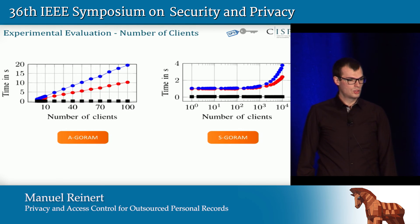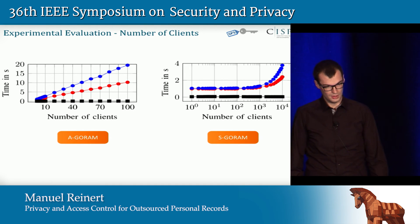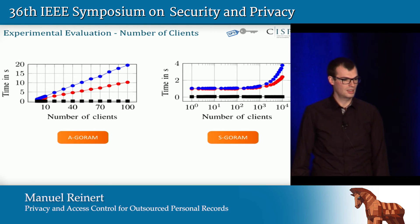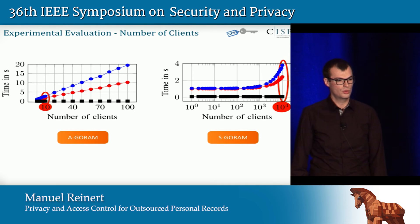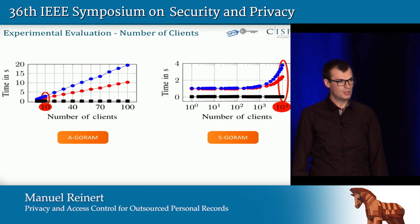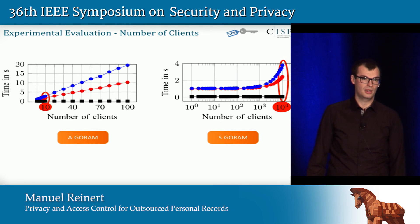Looking at the Scalable GoRAM solution, this becomes apparent when we vary the number of clients. Note that the x-axis on the right plot is on a logarithmic scale, so the increase is actually linear. To highlight two numbers: for 10 clients in Accountable GoRAM we need four seconds to write and two seconds to read — the same time Scalable GoRAM needs for 10,000 clients. So here we have a drop of four orders of magnitude.